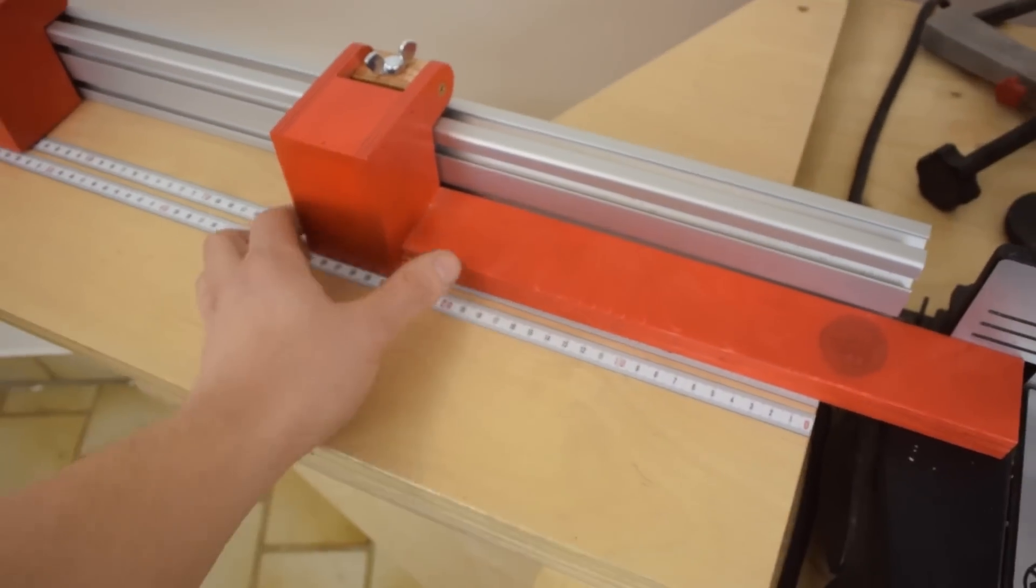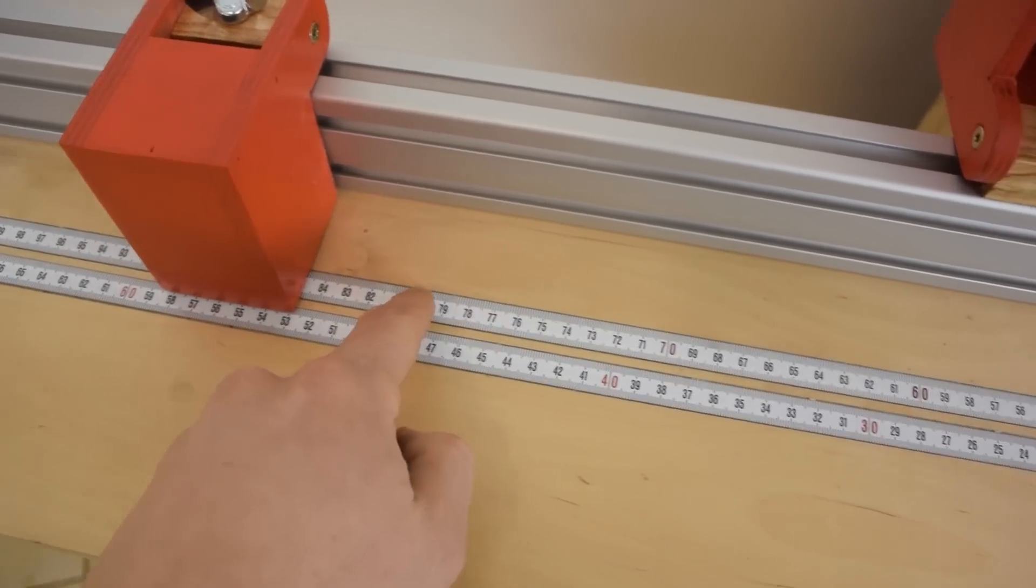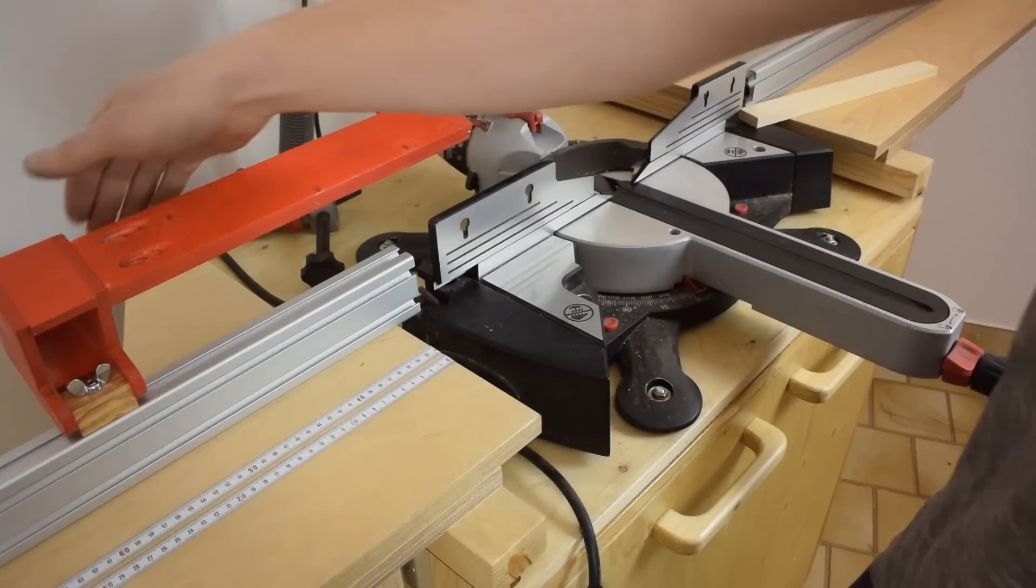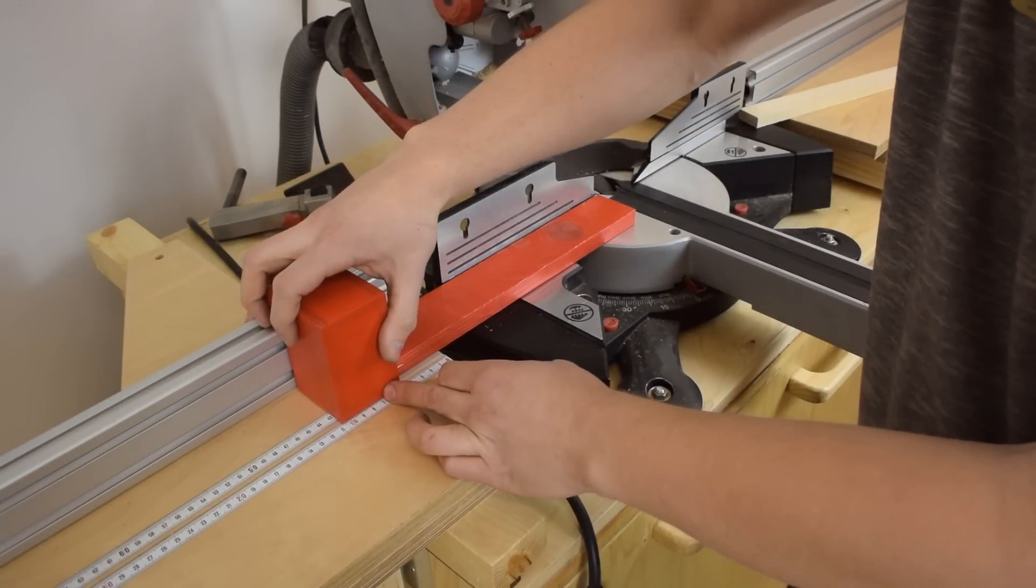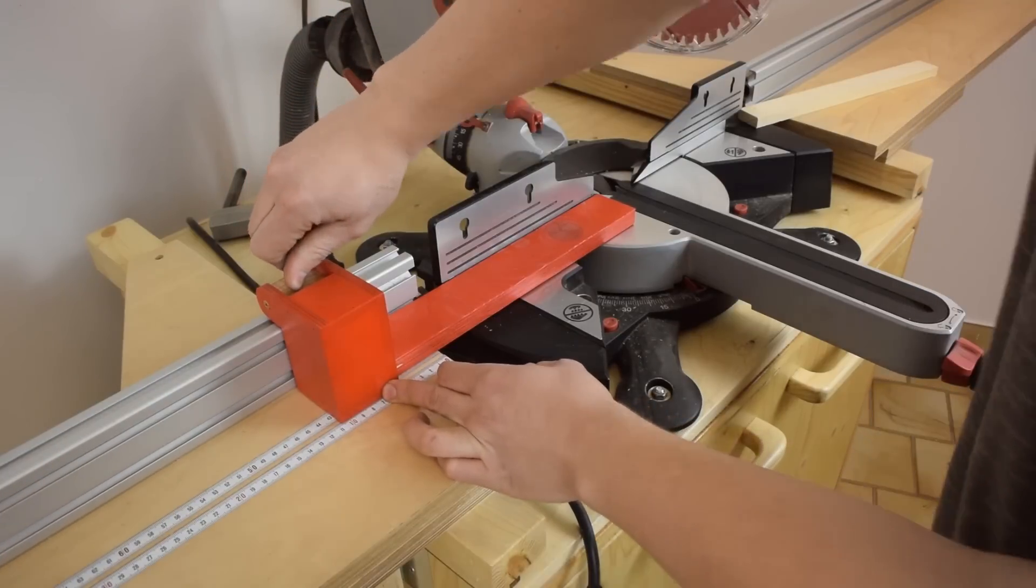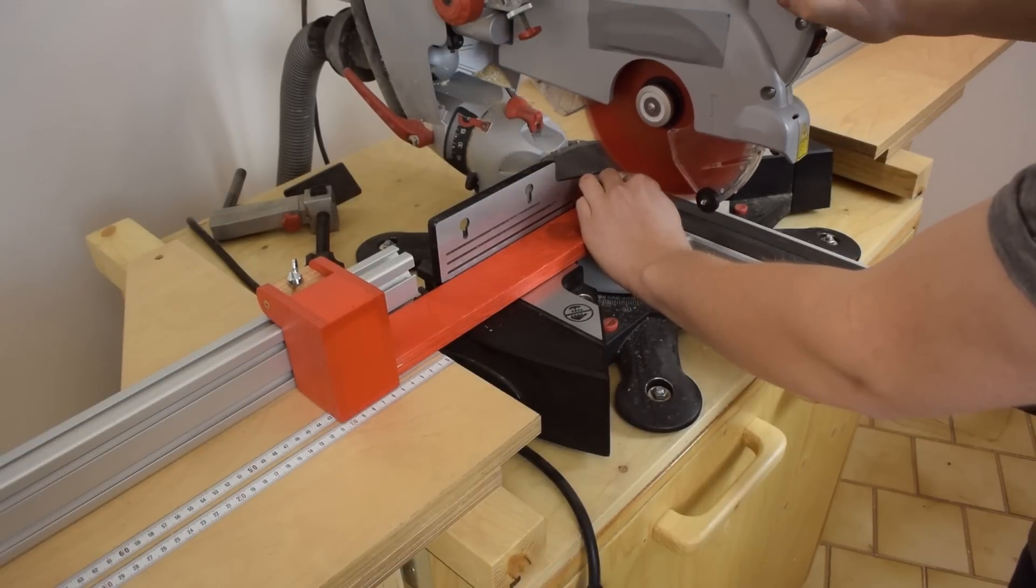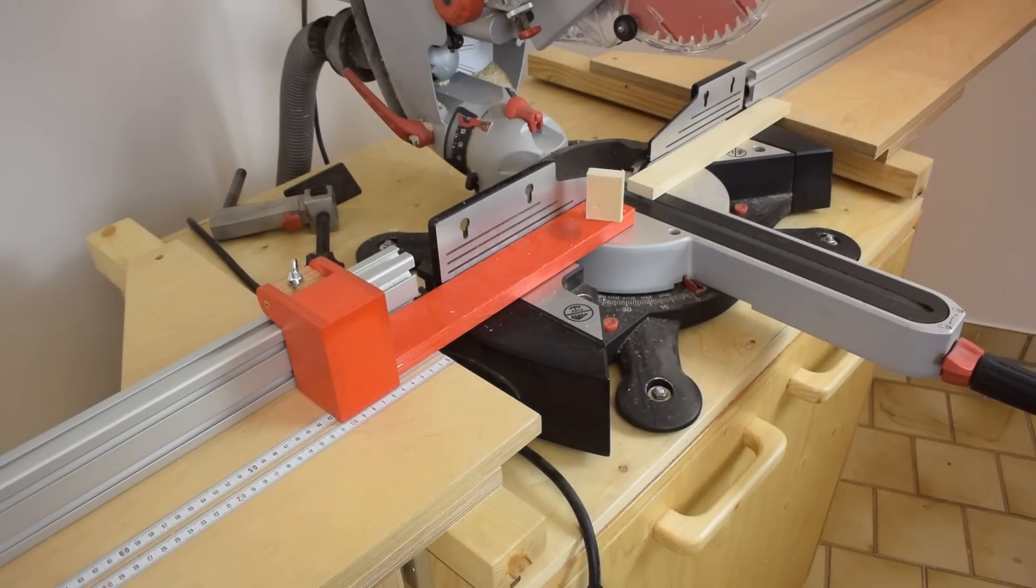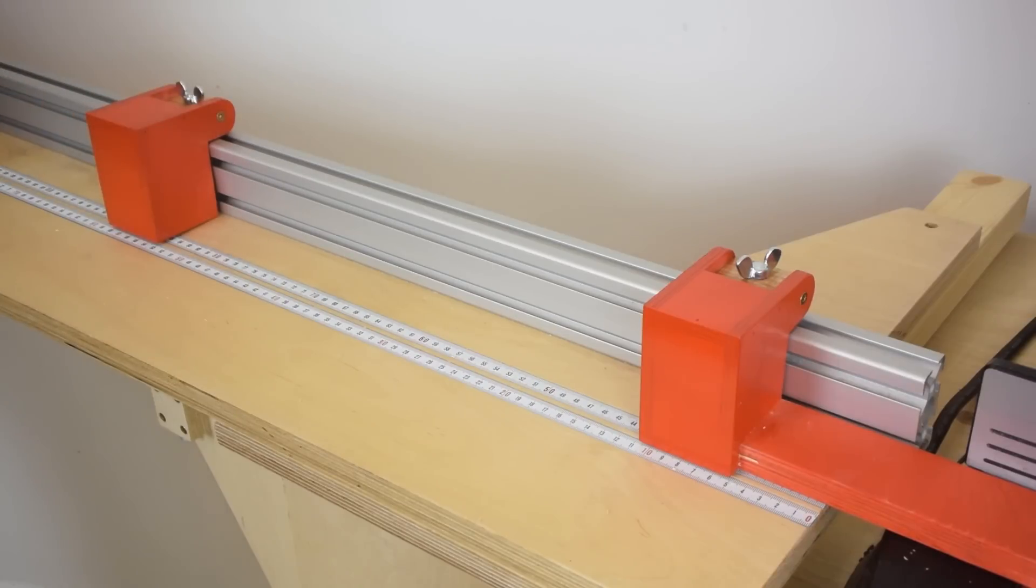And when I'm cutting longer pieces I just flip this away and use this stop block with this scale which has zero right at the saw blade. The epoxy shape gives these stop blocks a lot of rigidity even though they're just made from wood.